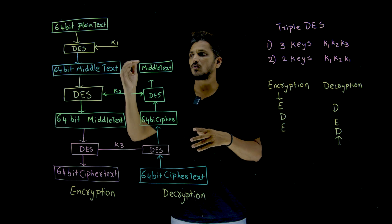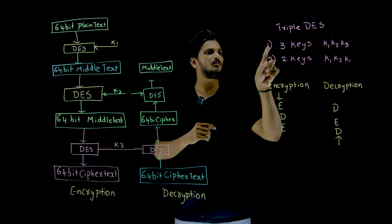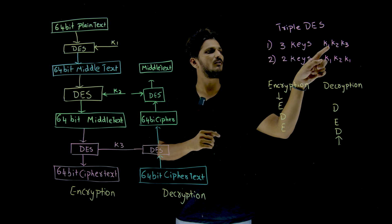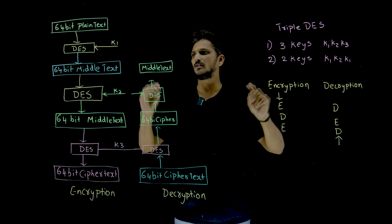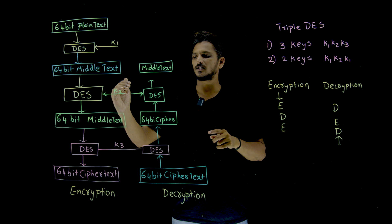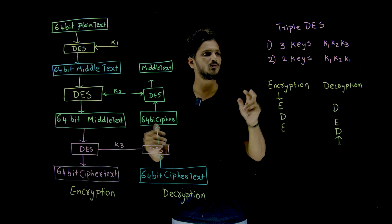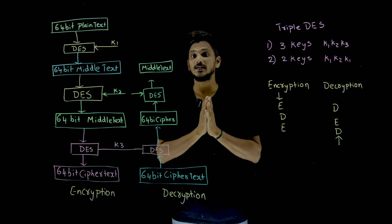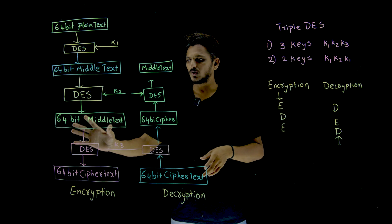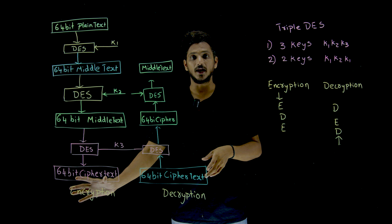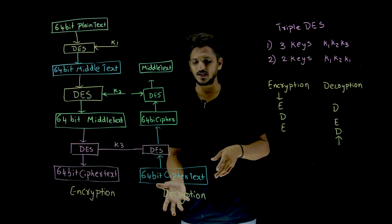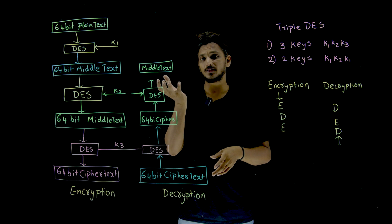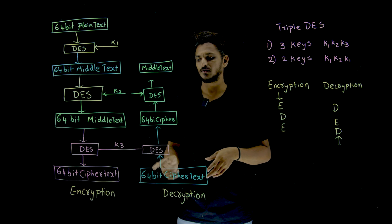In Triple DES with three keys, we take K1, K2, and K3 — three keys are taken. That's why the first method is called Triple DES with three keys. This is what happens during encryption, and the same thing in reverse happens during decryption.